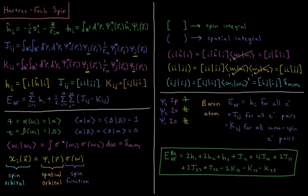The one-electron energy of a given electron i is h_i, which equals the integral over all space for electron 1 — from minus infinity to infinity in x, y, and z — of psi-star_i times h acting on psi_i for electron 1 in atomic orbital i. We then have our two-electron integrals; the one-electron integral depends only on the coordinates of electron 1.